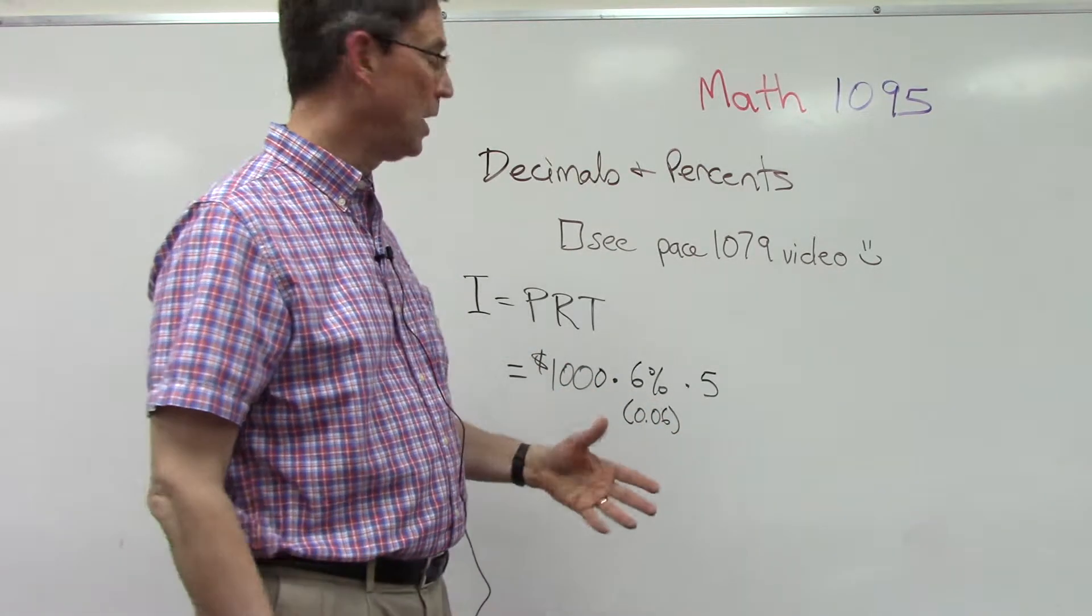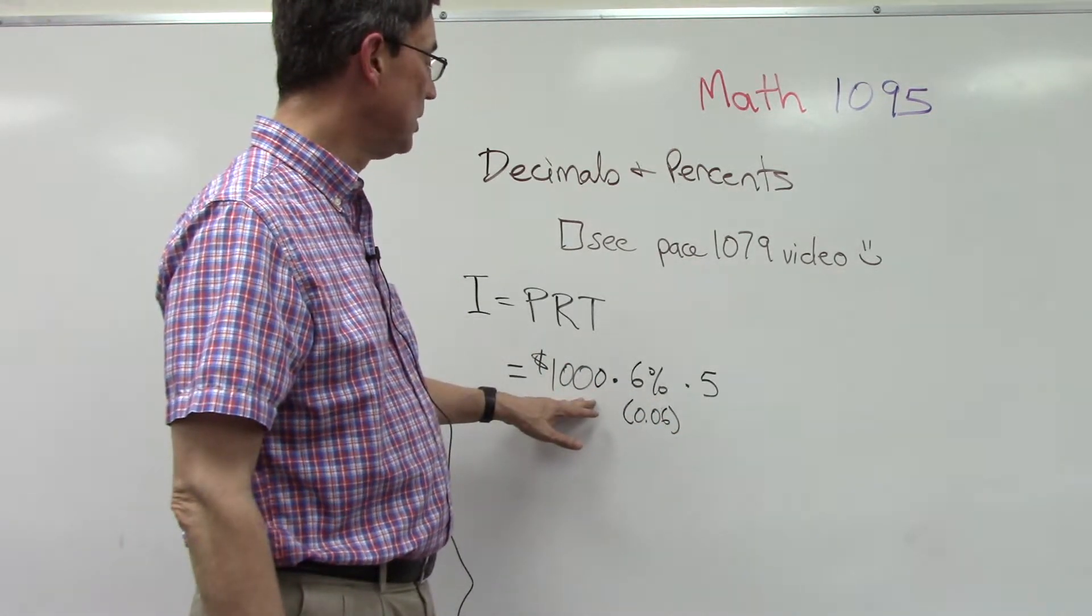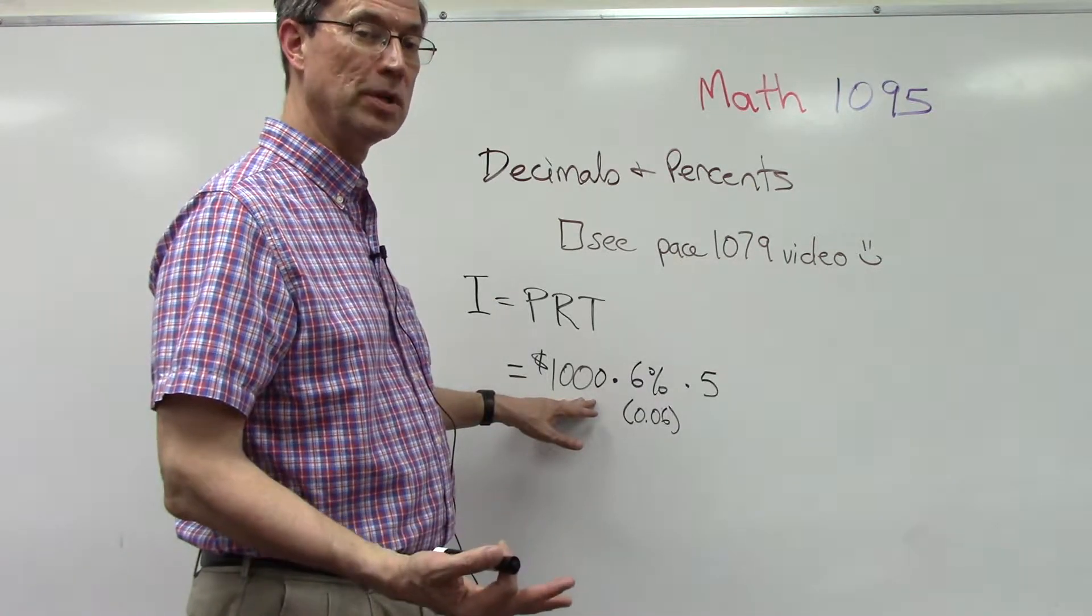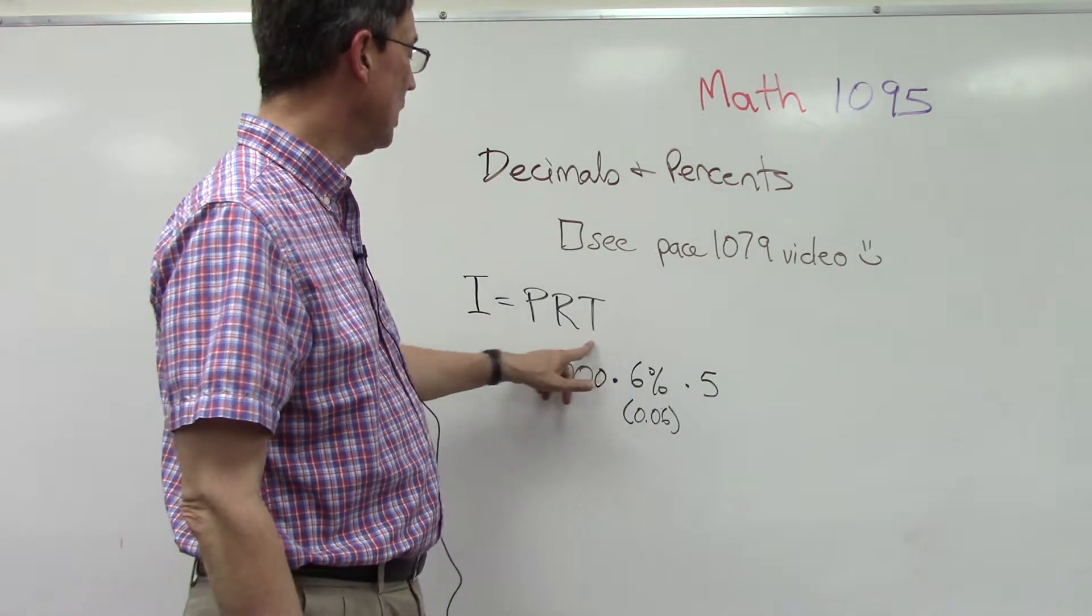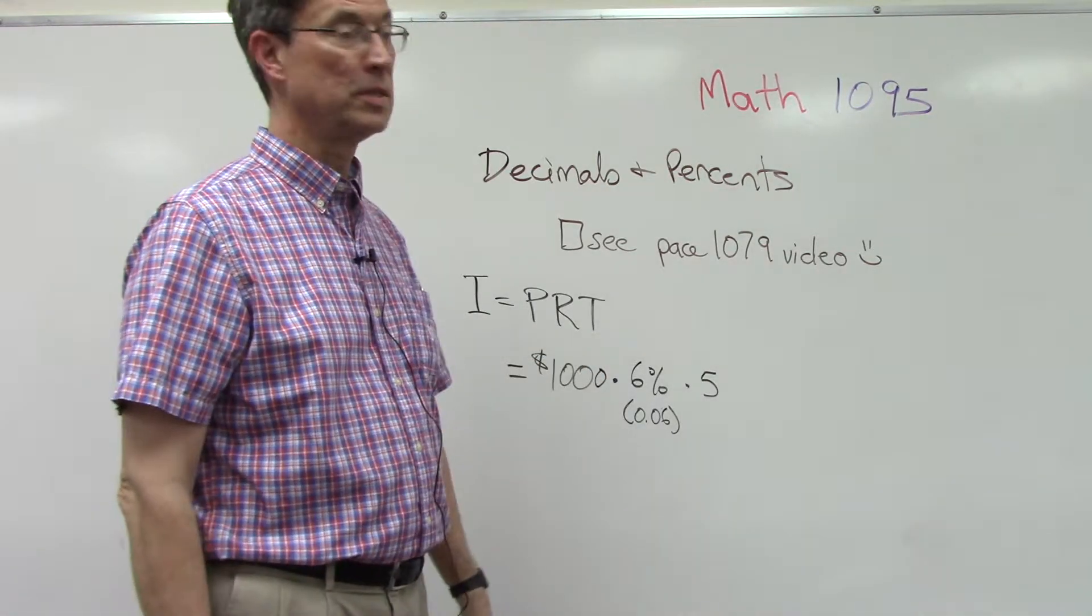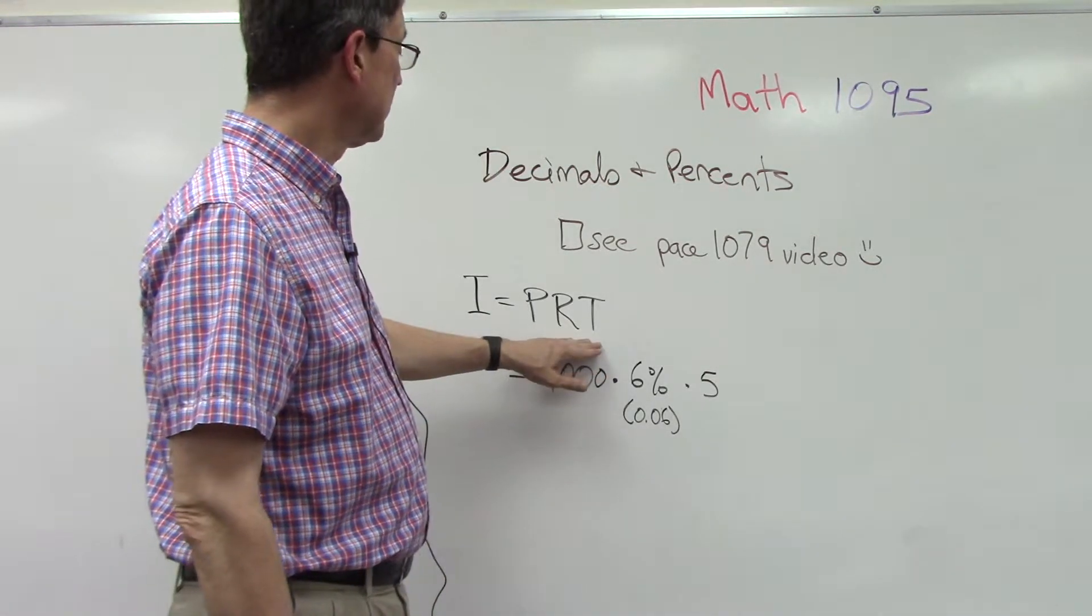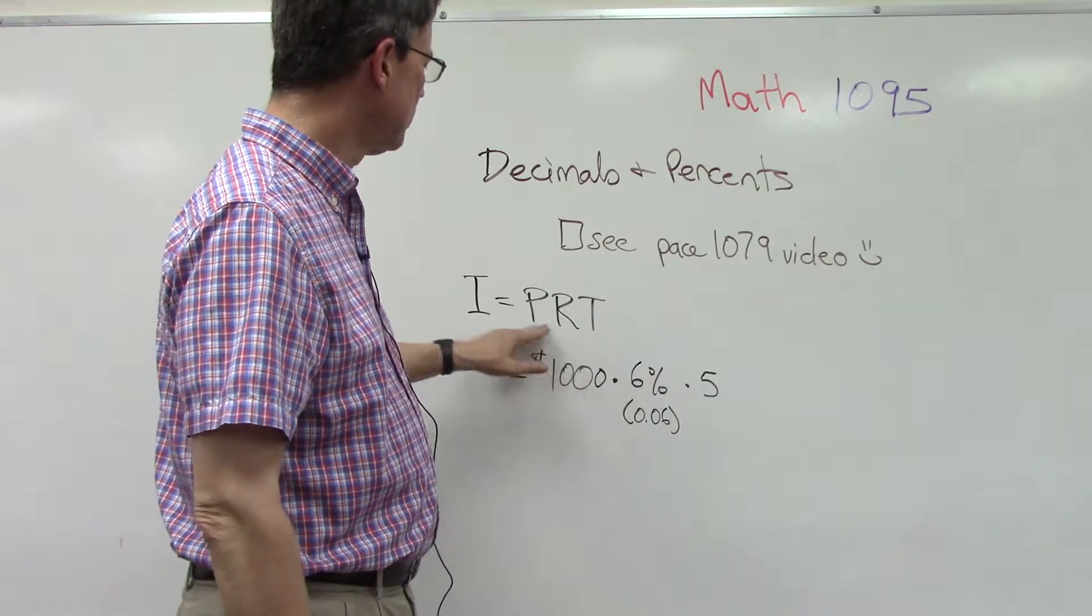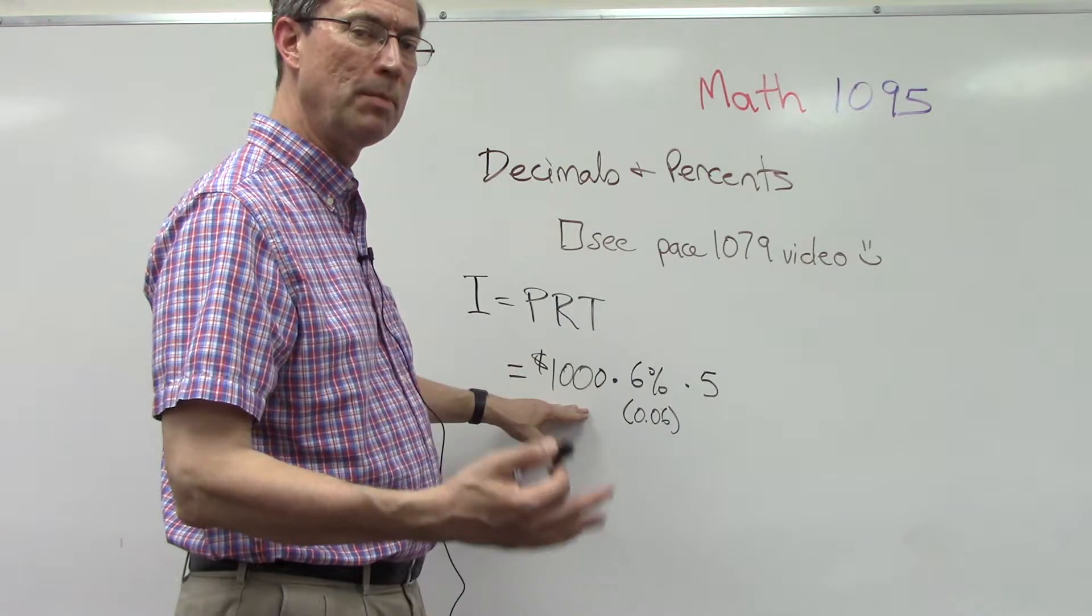So to borrow a thousand dollars and keep it out for five years, then pay it all back at once, I'm going to pay back a thousand dollars plus three hundred dollars in interest. This is a pretty simple formula for calculating interest.